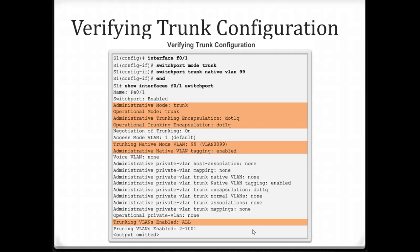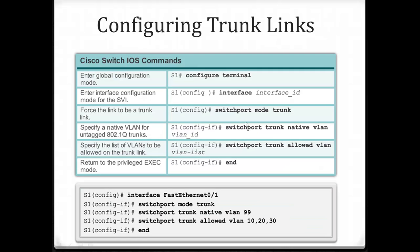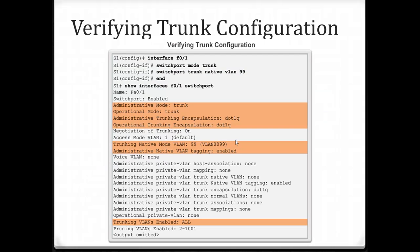To verify your trunk configuration, use 'show interface' on the port configured as a trunk. You'll notice the mode should be set to trunk, and you can see the encapsulation method — the default is 802.1Q, which is the most popular. You could explicitly set the encapsulation in interface mode, but with the newer IOS versions you don't have to. You can also view the native VLAN from this output.